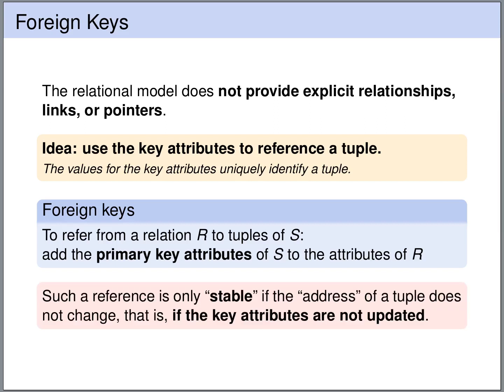Such a reference is only stable if the address of the tuple that we refer to does not change. That means the key attributes of these tuples should not be updated. When choosing primary keys for our tables, we should choose keys for which we are sure that the attributes are never updated.